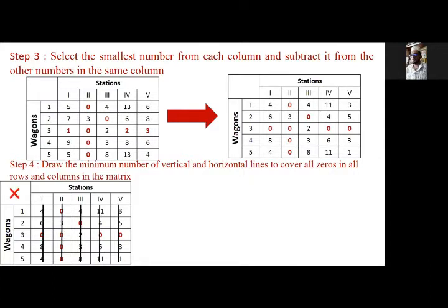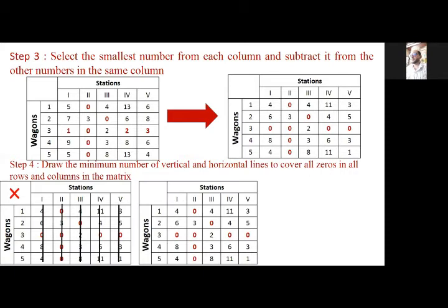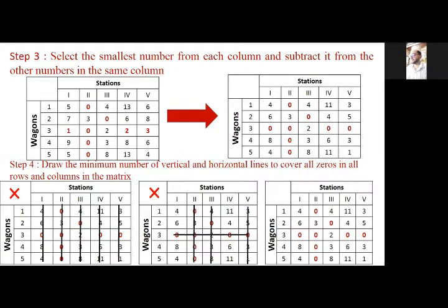That solution is wrong. In another example, drawing 1, 2, 3, 4 lines — but again I am marking it as wrong, because there might be a way to cover all the zeros in fewer than 4 lines. Another way to cover the zeros in the minimum number of lines is to draw one horizontal, one vertical, and one more vertical. All zeros are covered by 3 lines only. Hence this is the correct matrix.